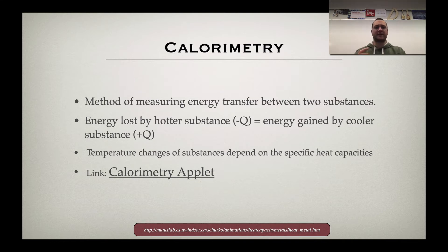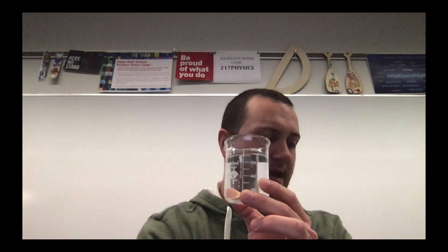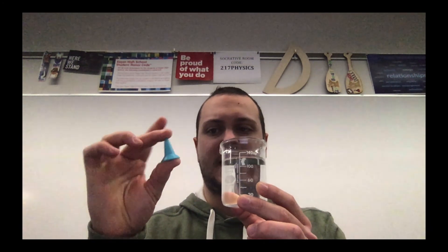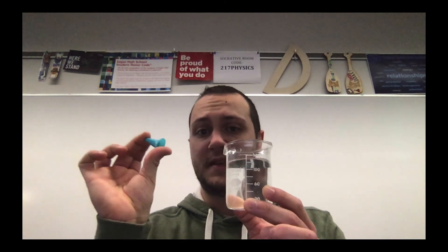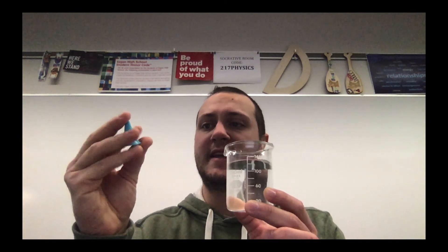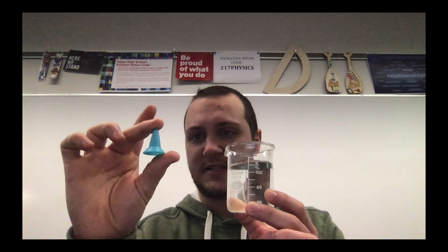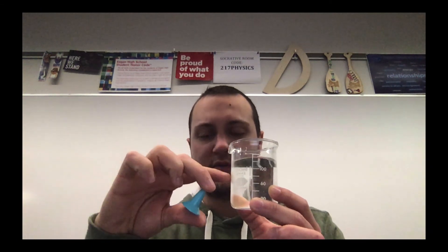So you have two materials, you bring them in contact with each other, and how much each of those materials' temperature changes by is going to be dependent on the masses and on the specific heats. Keep in mind what a high specific heat value means. So to give an example of what calorimetry looks like, I have a volume of water and I have this random plastic cone looking thing.